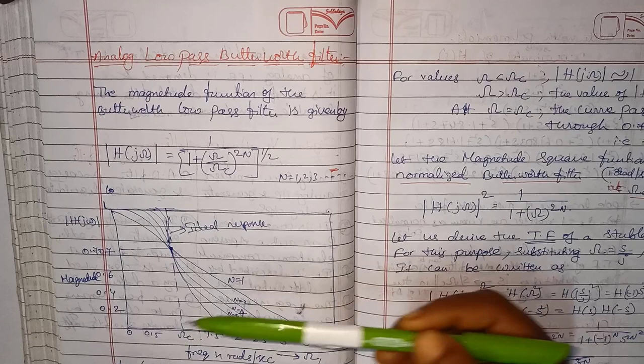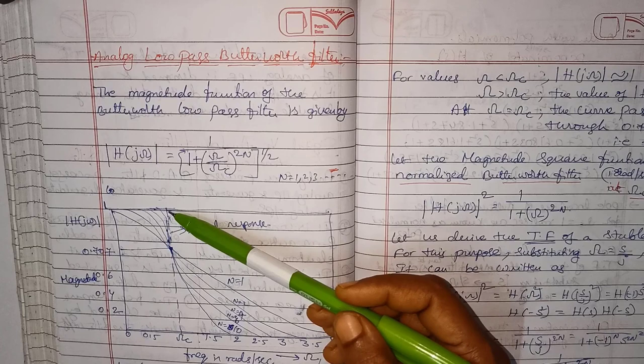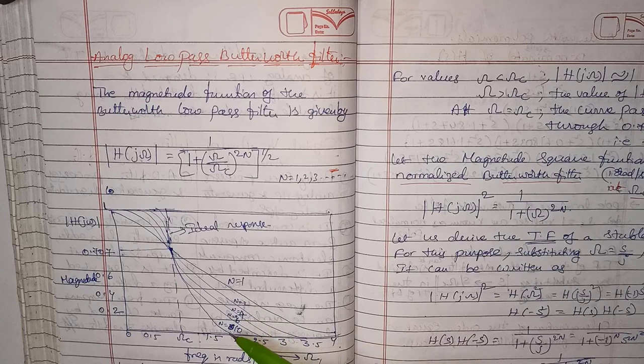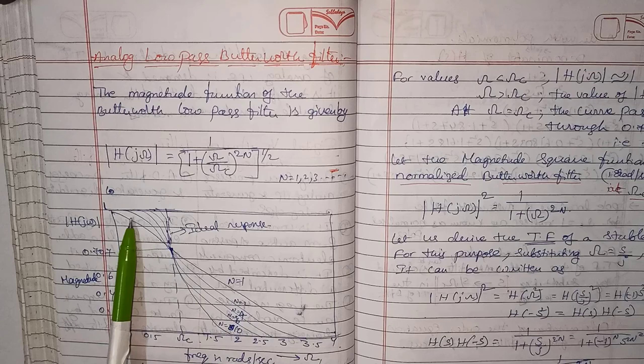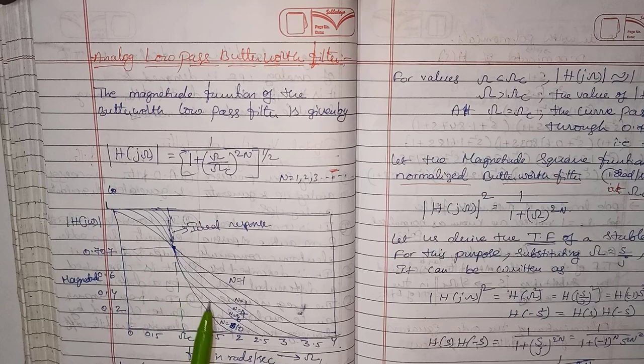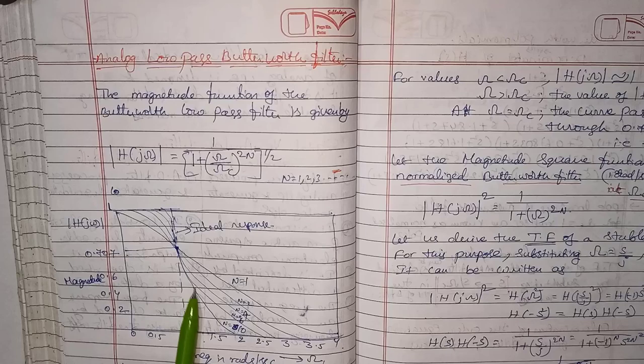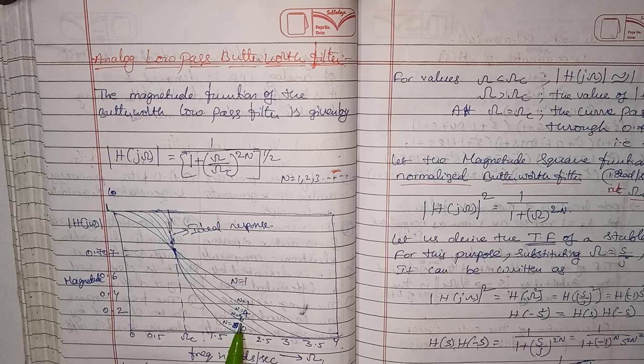This magnitude response approaches the ideal low-pass characteristics as the order n increases. The response for n = 1, n = 2, n = 3, and n = 6 are shown. The response for n = 10 almost reaches the ideal cutoff frequency as n increases.